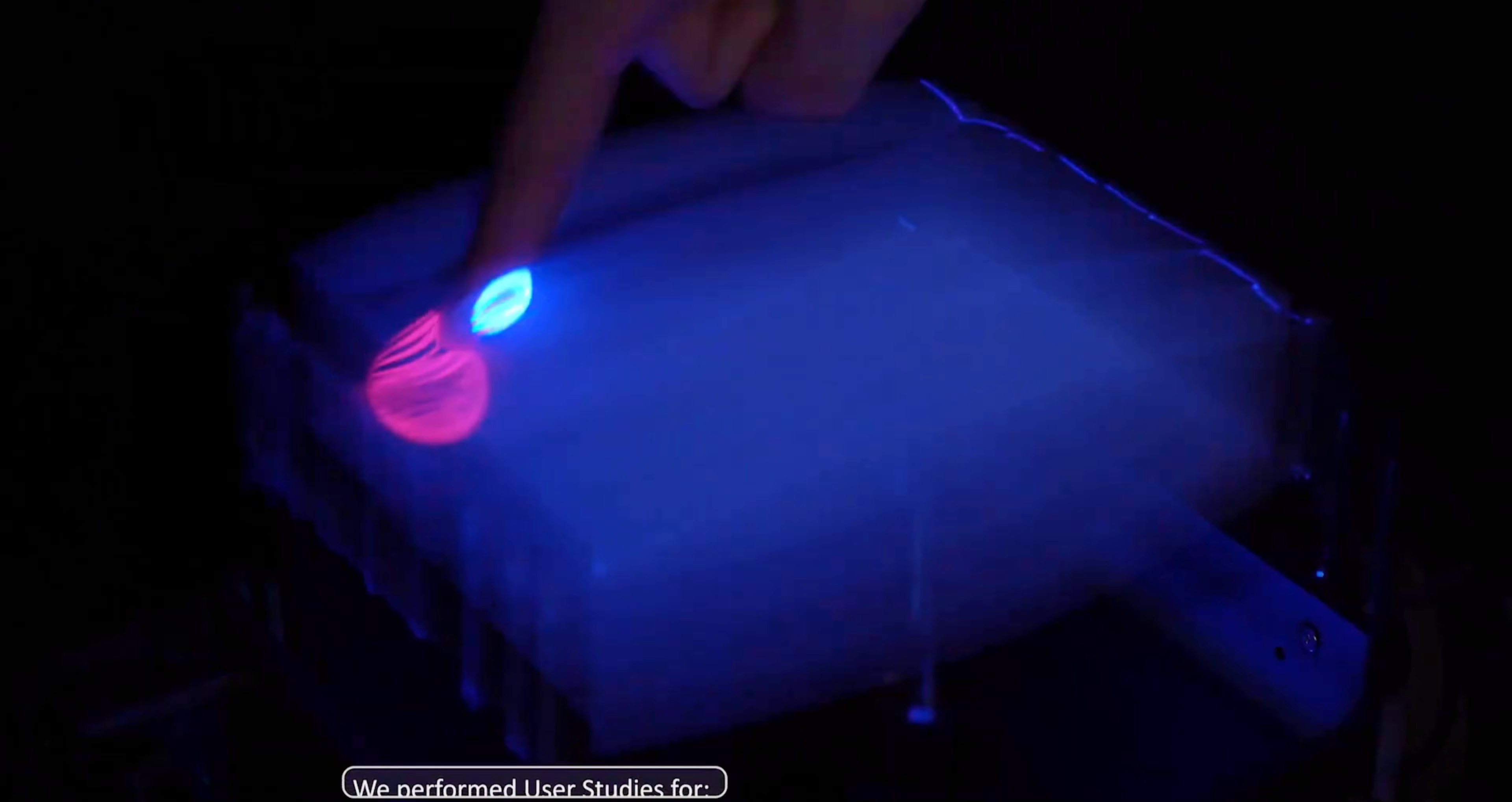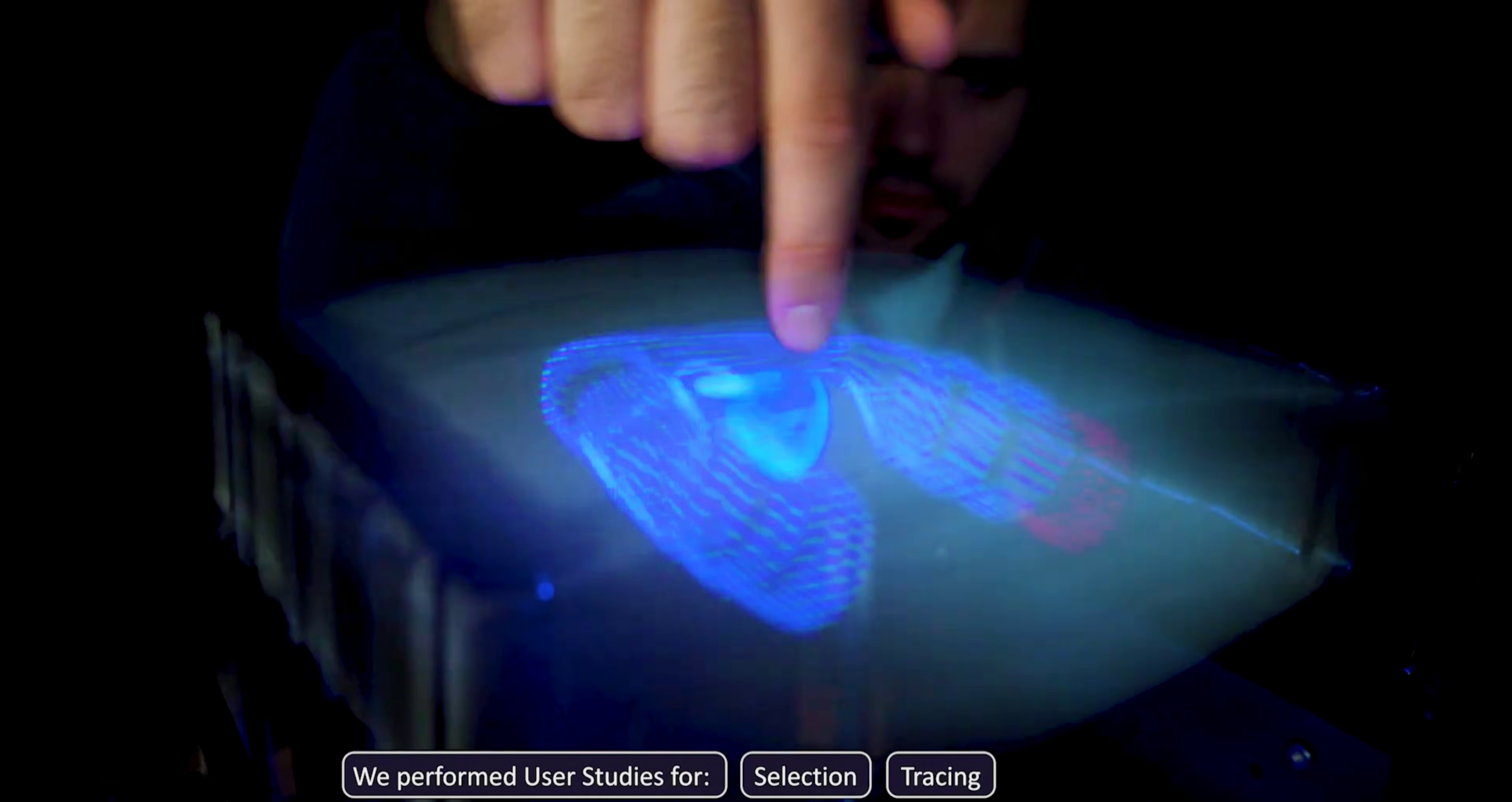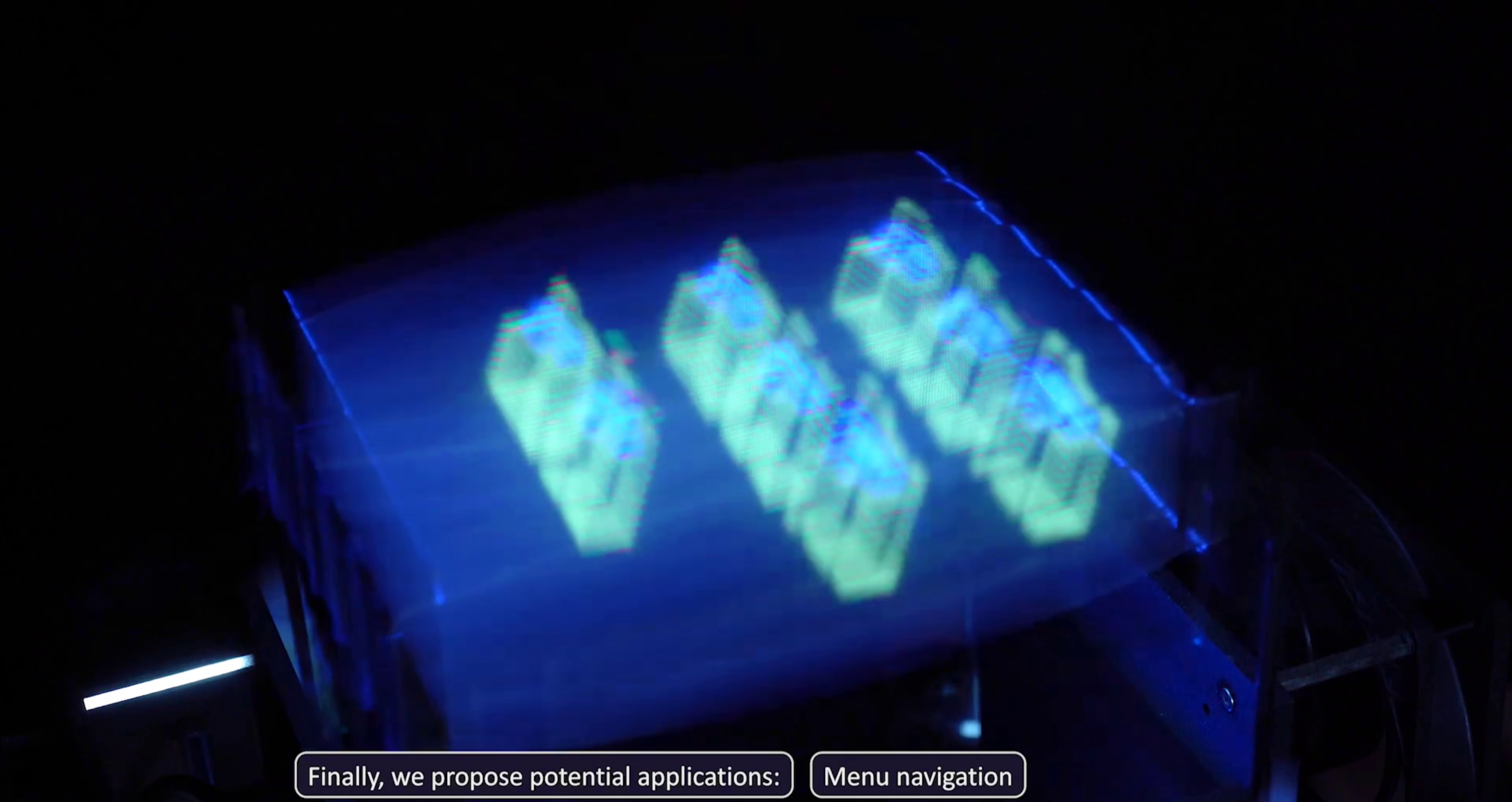These gestures map to actions like selection, scaling, movement, and tracing. The system does not use abstract metaphors or indirect control schemes. The alignment between hand position and rendered objects allows for interactions that follow physical movement patterns.